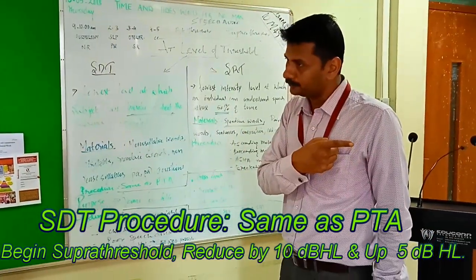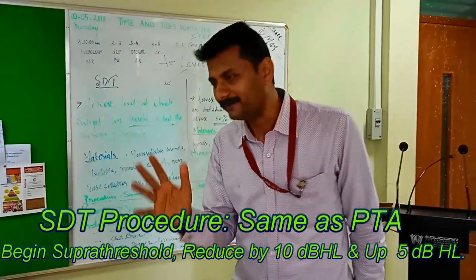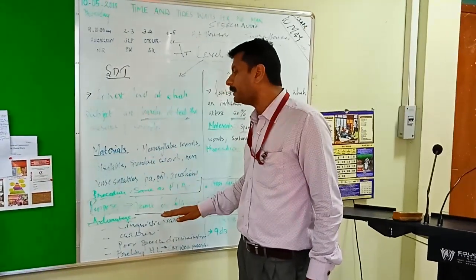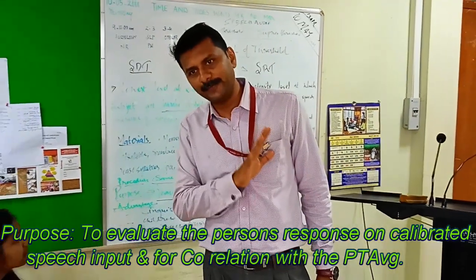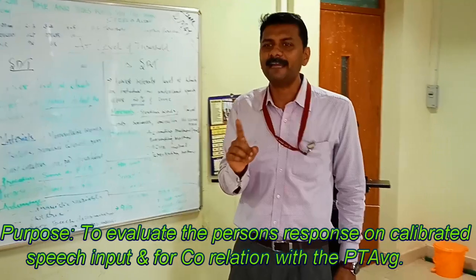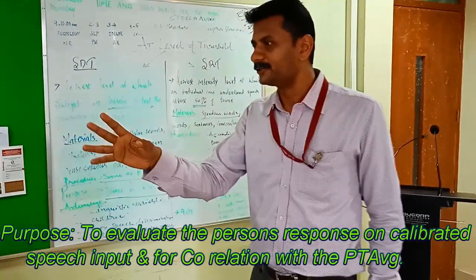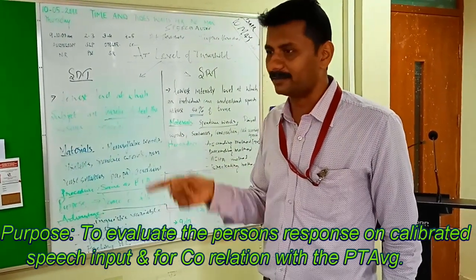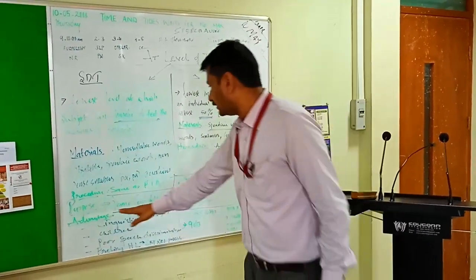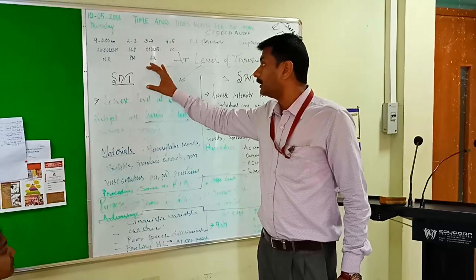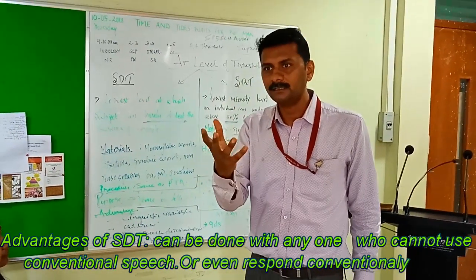The procedure for SDT is the same as pure tone audiometry: start suprathreshold, go down by 10, go up by 5 — the same method. The purpose of both SDT and SRT is to identify how the person is responding to speech, because the client came with a complaint that they are not appreciating what people speak around them.